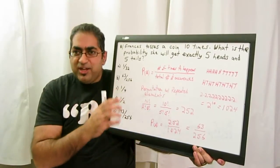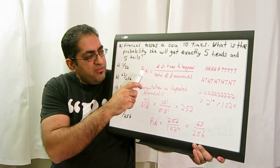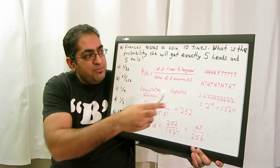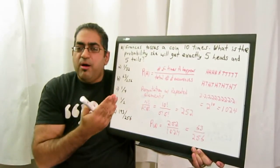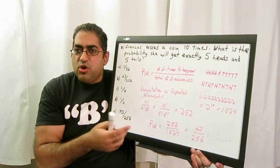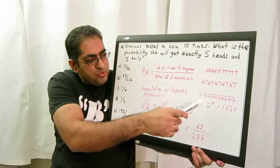So let's go back to the problem. Probability of A is the number of times A happens, which is the number of times you get this configuration, over the total number of occurrences, which is the total number of possibilities you can get from tossing a coin ten times.